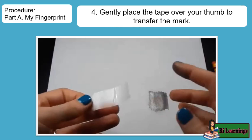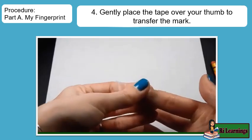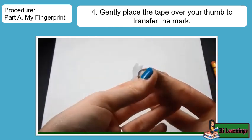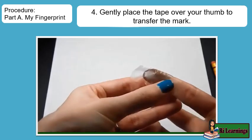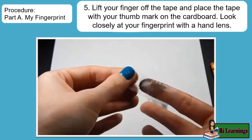Step 4: Gently place the tape over your thumb to transfer the mark. Step 5: Lift your finger off the tape and place the tape with your thumb mark on the cardboard. Look closely at your fingerprint with a hand lens.